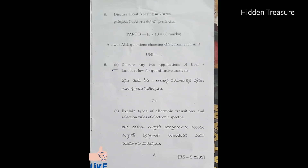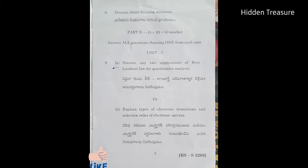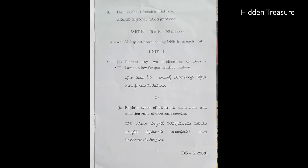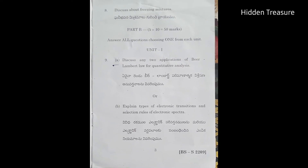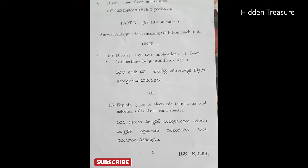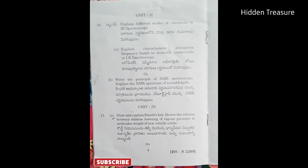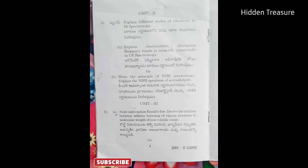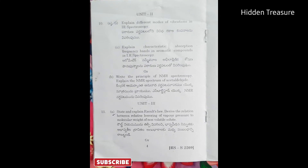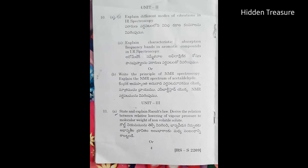Part B has internal options and consists of 10-mark questions — answer any five. Ninth question: discuss any two applications of Beer-Lambert law for quantitative analysis, or explain types of electronic transitions and selection rules of electronic spectra. Tenth question, explain different modes of vibration in IR spectroscopy.